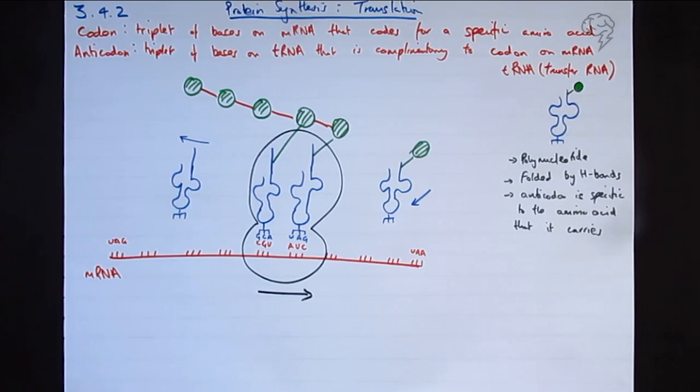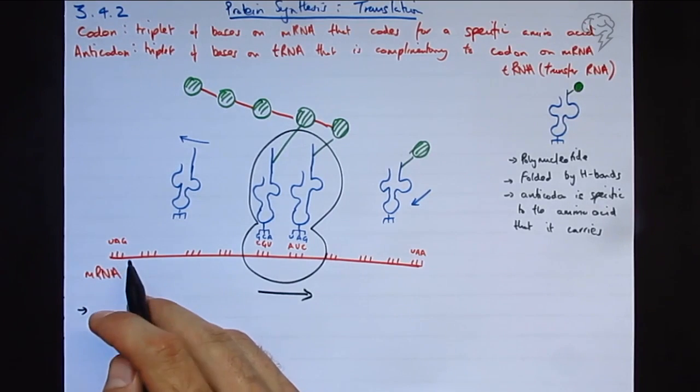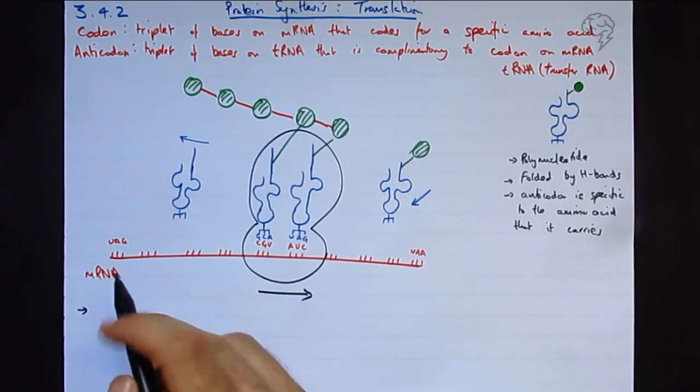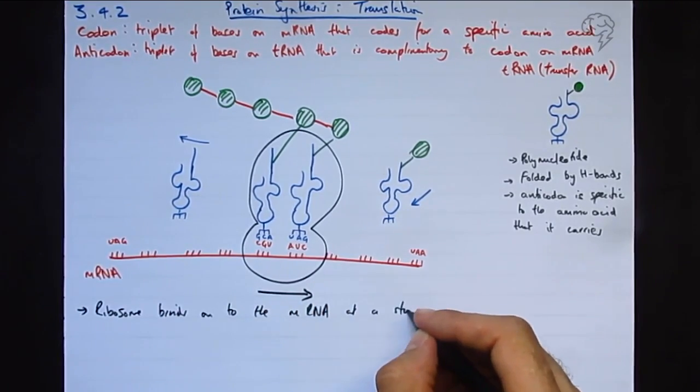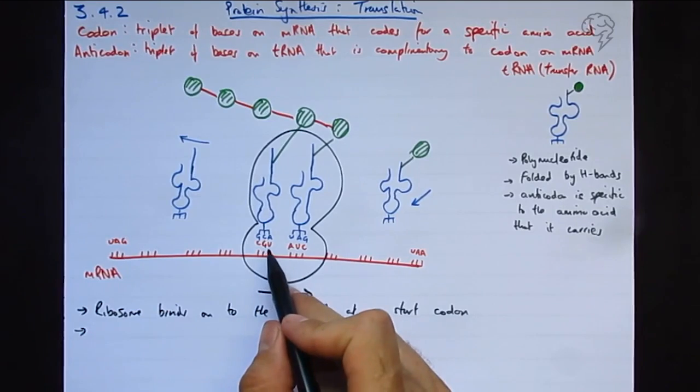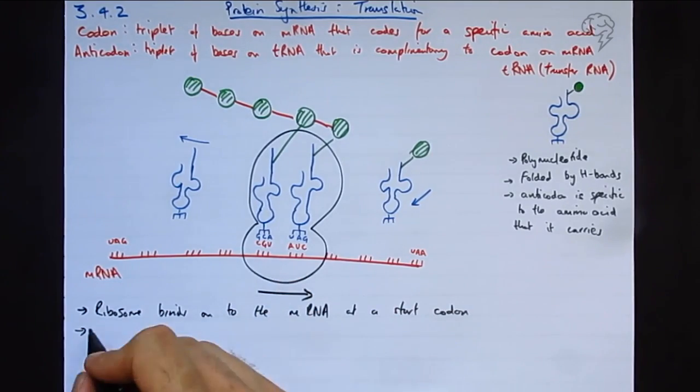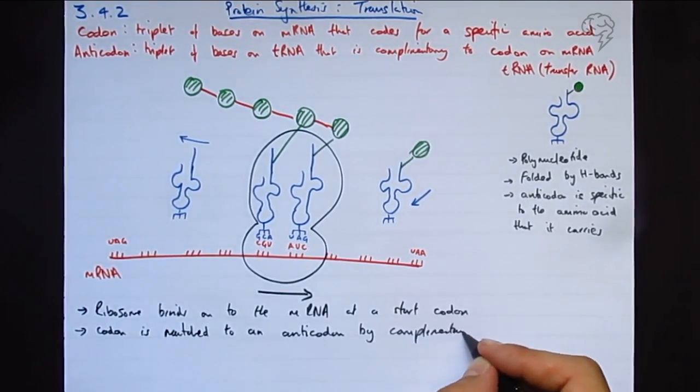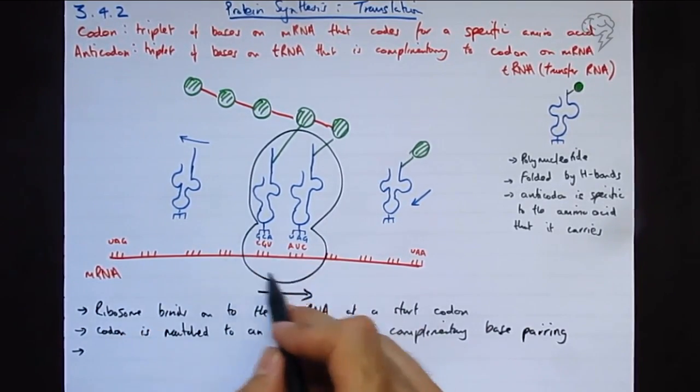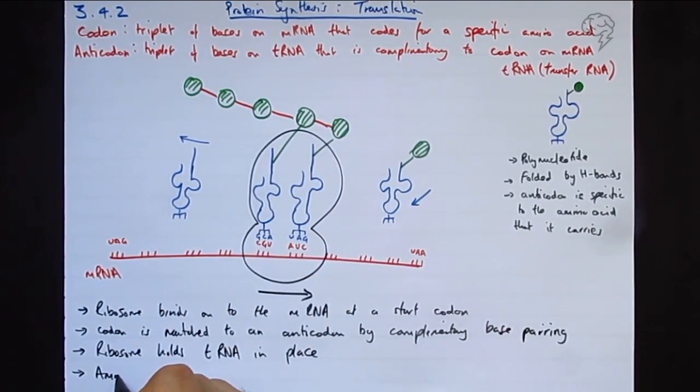Okay, we'll do some more labeling at the end, but let's put some notes down for translation. The ribosome binds onto the messenger RNA at a start codon. The codon is matched to a complementary anticodon, and that's done by complementary base pairing. The ribosome holds the transfer RNA in place, and then the amino acids are joined together with a peptide bond.